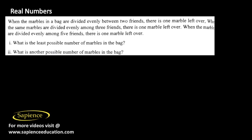When the marbles in a bag are divided evenly between two friends, there is one marble left. When the same marbles are divided evenly among three friends, there is one marble left. When the marbles are divided evenly among five friends, there is one marble left. So what is the least possible number of marbles in the bag, and what is another possible number of marbles in the bag?